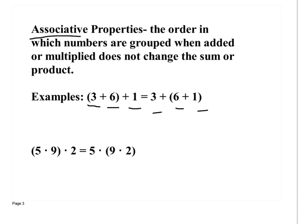Same idea for multiplication: (5×9)×2 — five times nine is 45, and 45 times two is 90. And 5×(9×2) — nine times two is 18, and 18 times five is 90. So I can change the grouping and not change the answer. This is associative property.